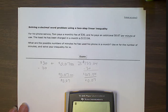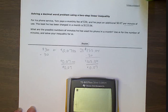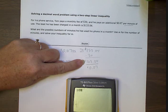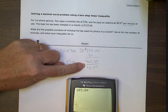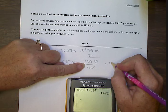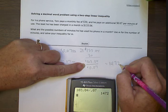So I have a calculator now, let me scoot it up a little. I'm going to take this number, 103.04—this line means divide by 0.07—that gives me an answer of 1,472 minutes.